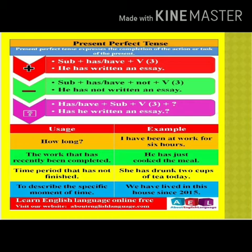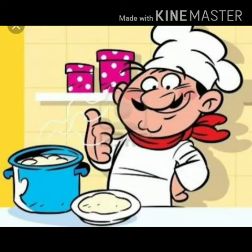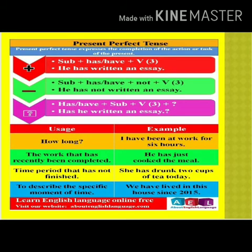Now let us discuss the uses of present perfect tense. First, we use it to show the duration of work — how long something has been happening. Example: 'I have been at work for six hours.' Second, to show work that has recently been completed: 'He has just cooked the meal.' Third, to show an action whose effect is still present now: 'She has drunk two cups of tea today' and 'The traffic police have closed this road.' Fourth, to describe a specific moment in time: 'We have lived in this house since 2015.'